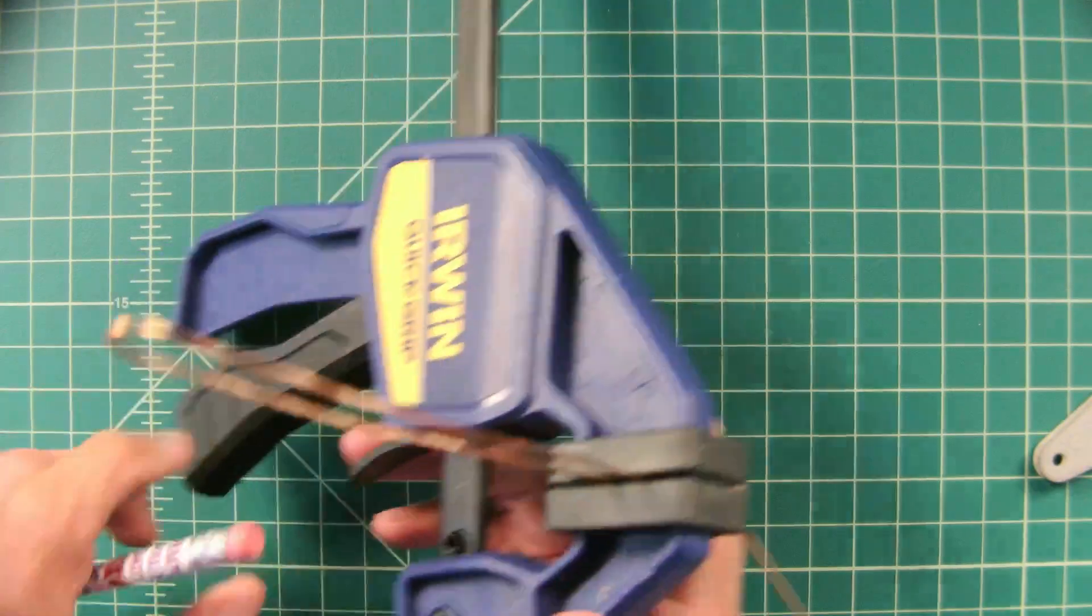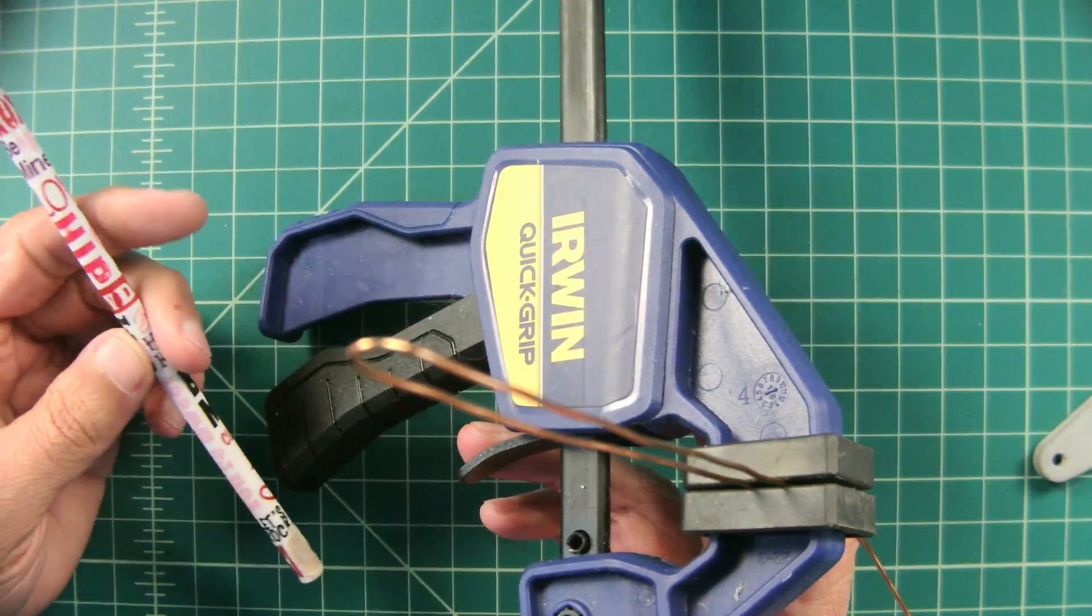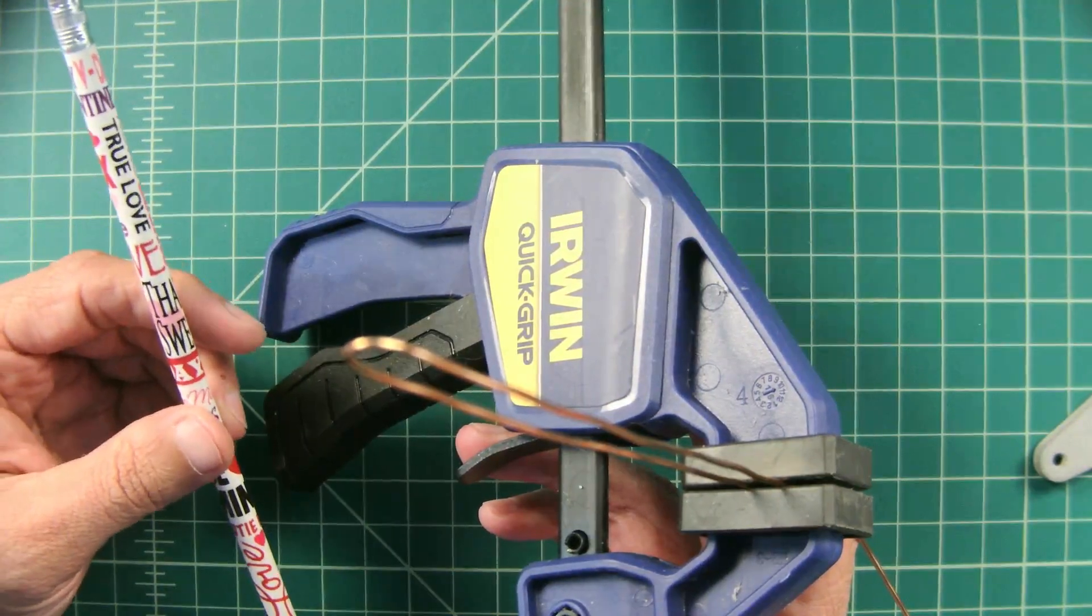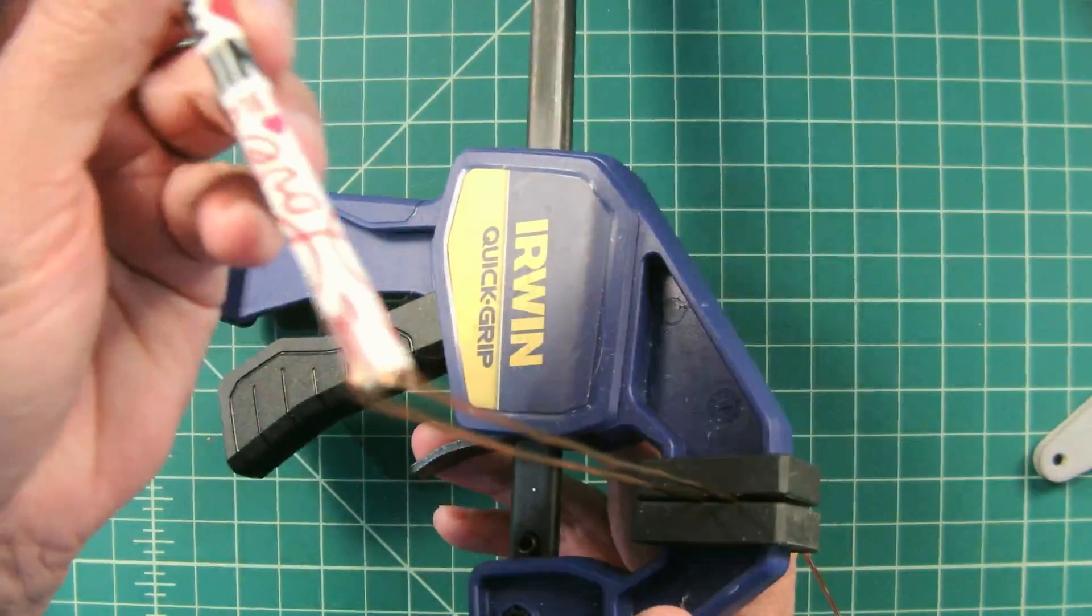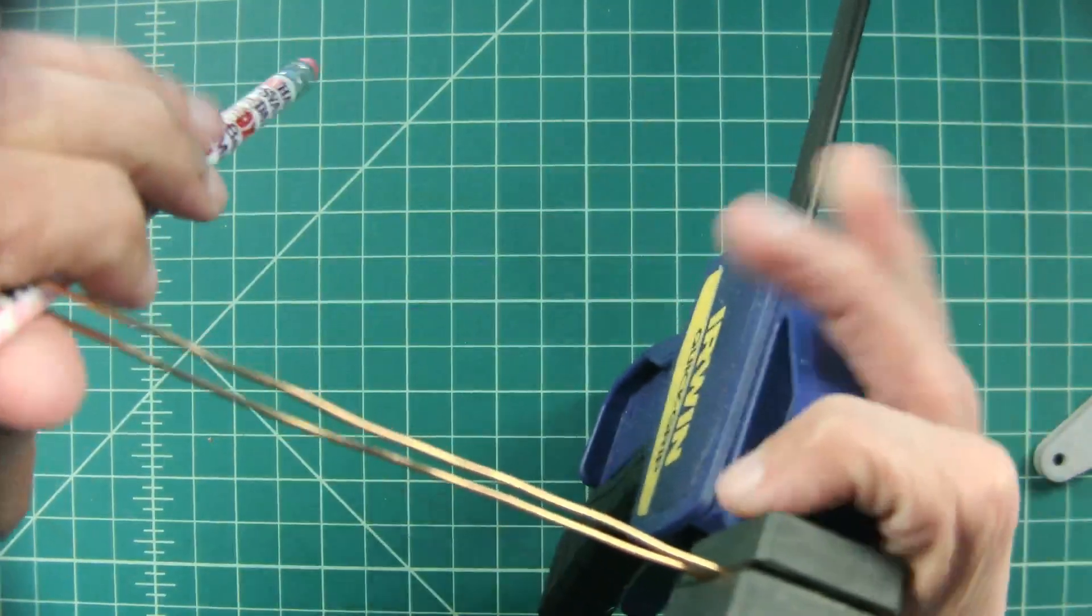Once you have this in your vise, you can use anything for twisting. I'm going to use this happy pencil that talks about true love. I'll just slide that in and give it some twists.